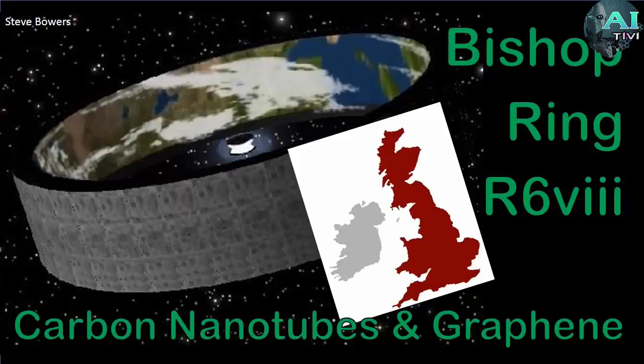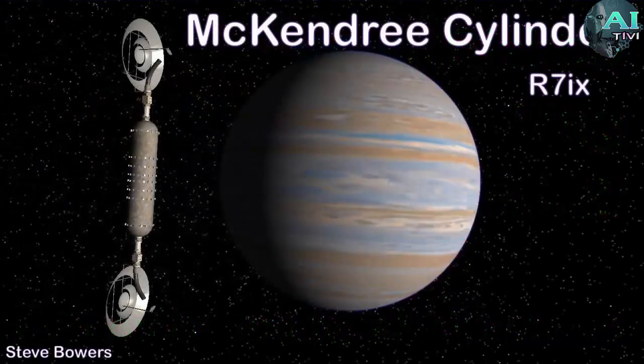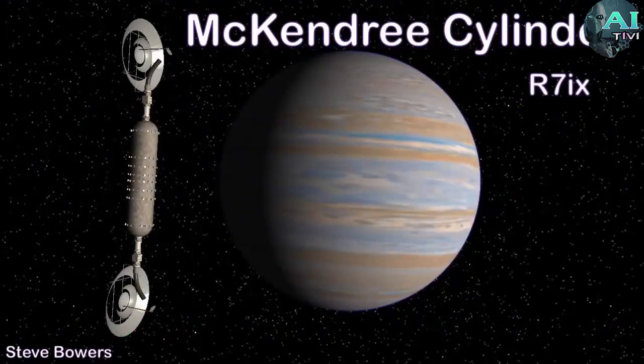There's a picture of Great Britain, it is actually to scale there. Great Britain is about a thousand kilometers from top to bottom. This thing is about 500 kilometers wide. It's about 2,000 kilometers in diameter. So it is actually pretty close to the size of the eastern United States in terms of internal land area. But the Bishop Ring is just sort of the tip of the iceberg of what you can do with graphene and nanotubes.